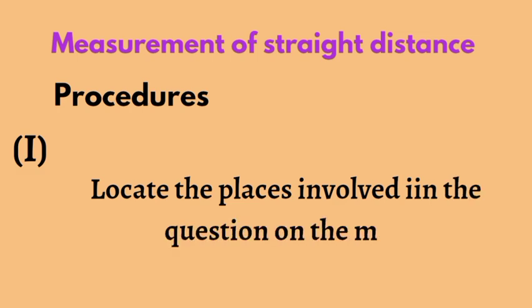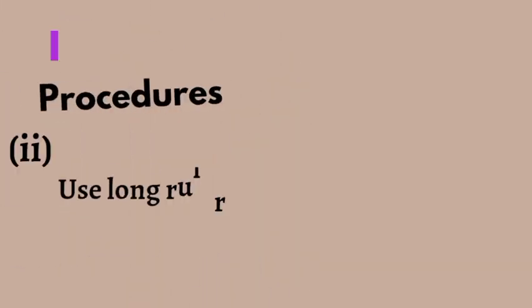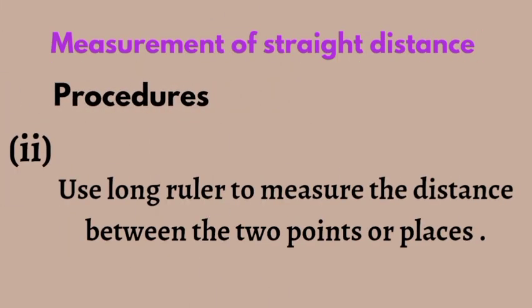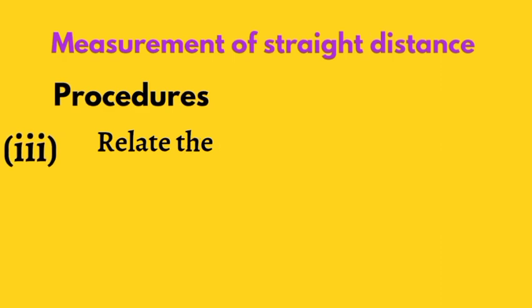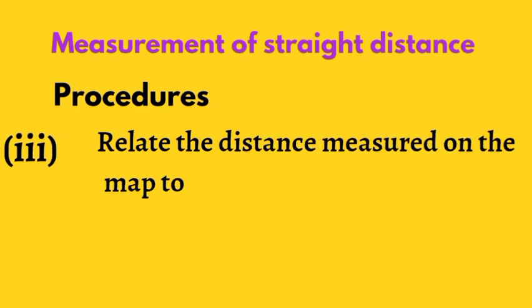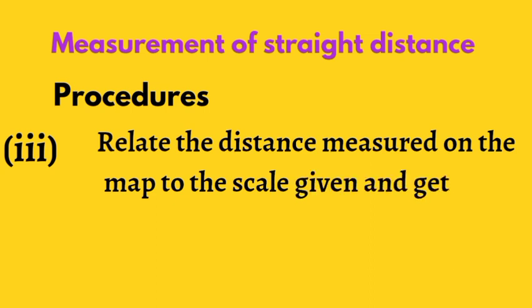First we'll be looking at measurement of distance on a straight line. This has to do with the interval between two points on a map. In carrying out the measurement of distance, these procedures are necessary: first, you locate the two places involved; secondly, you use your ruler to measure the distance between the two places; thereafter you relate the distance measured on the map to the given scale.